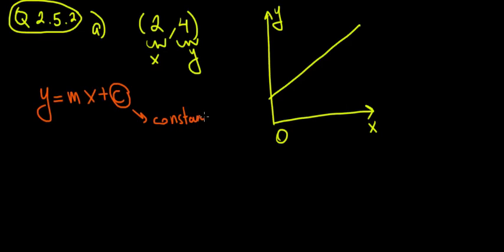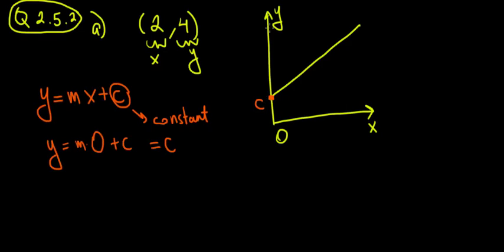Let's show on the graph what that means. The constant c is where the line crosses the y-axis. If you do the math: y equals m times x, and when x is zero, y equals zero plus c, which gives just c. So c is the value of y when x equals zero.